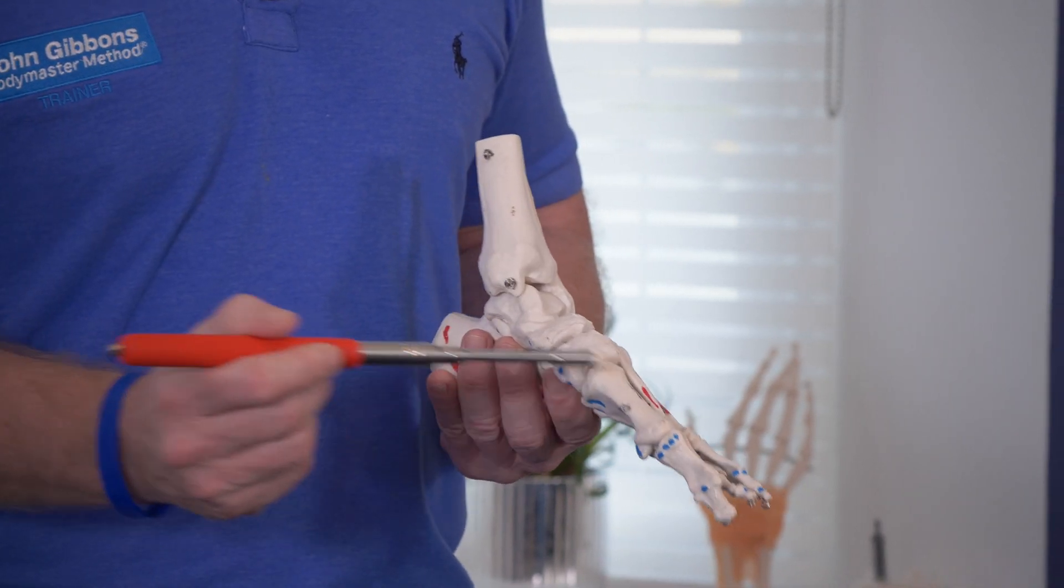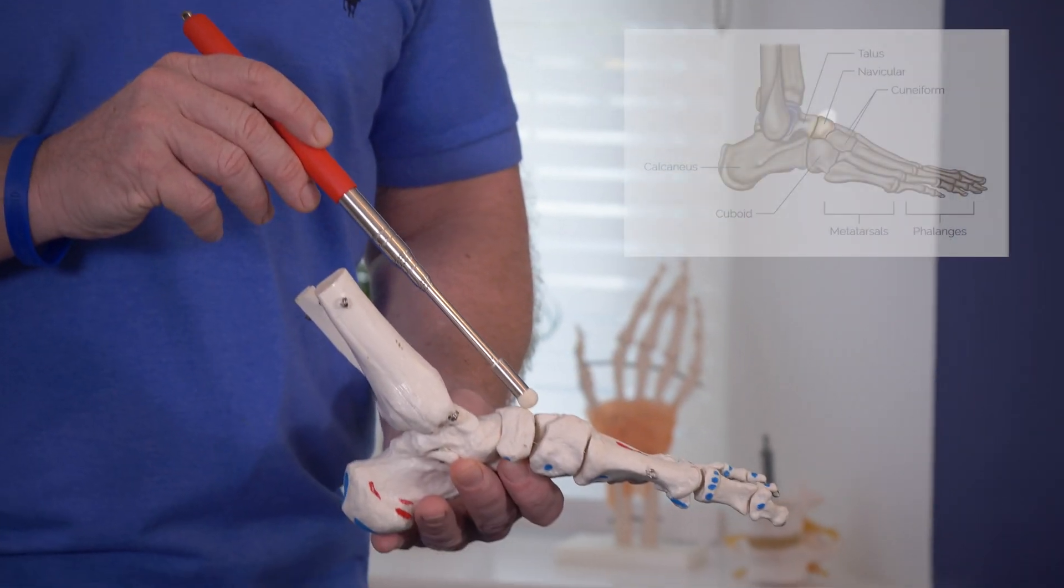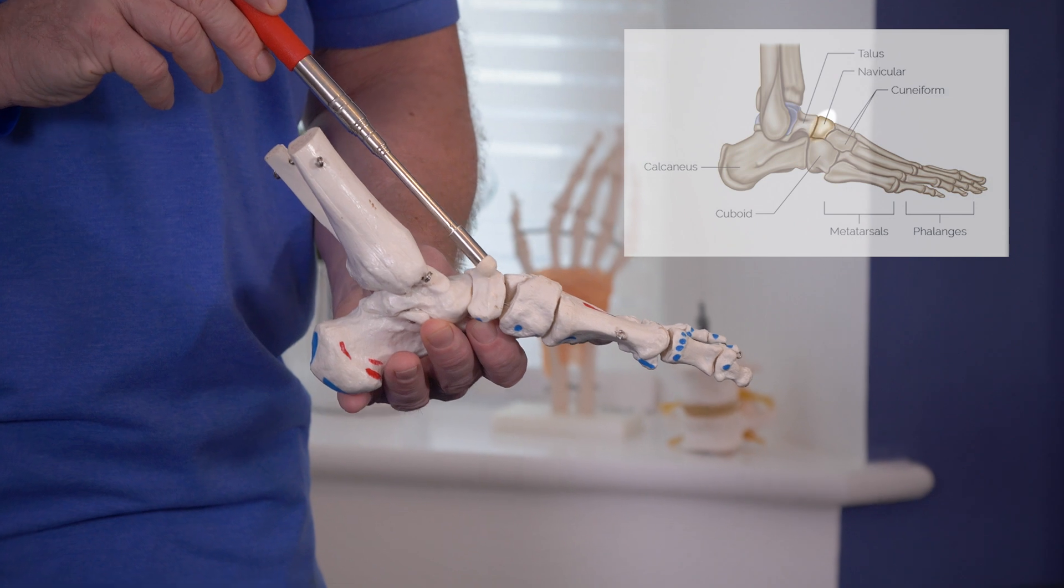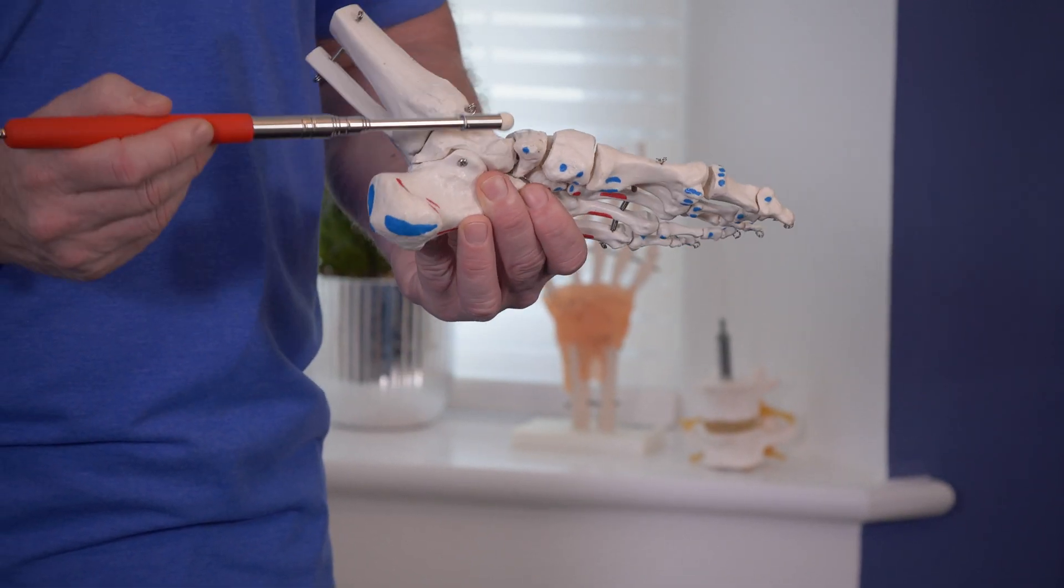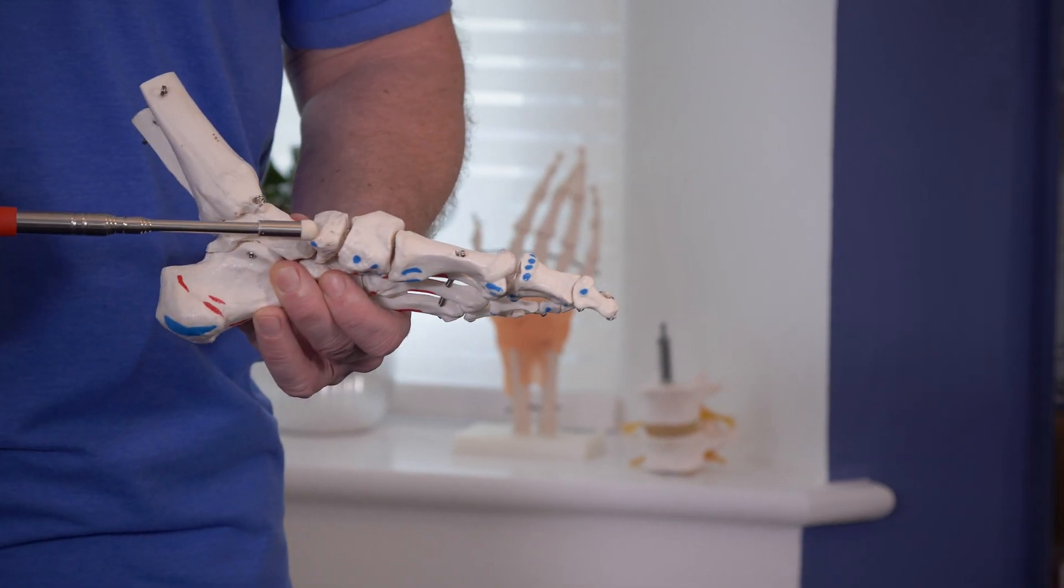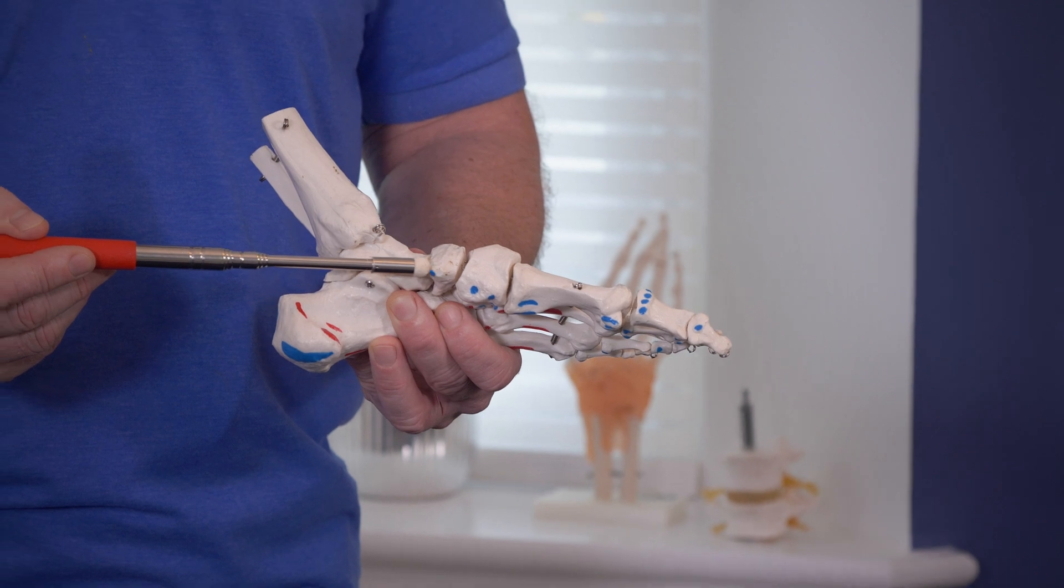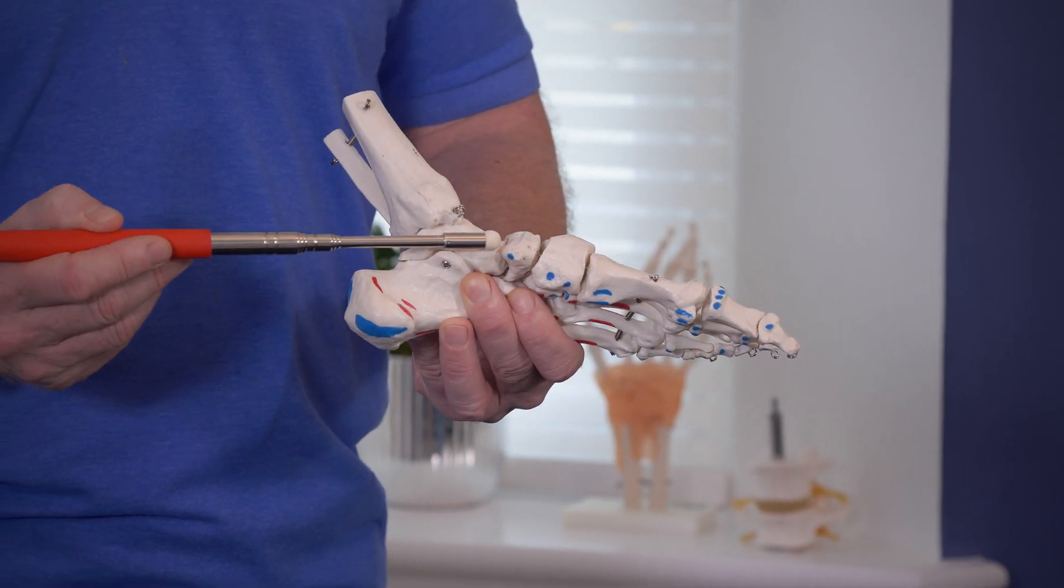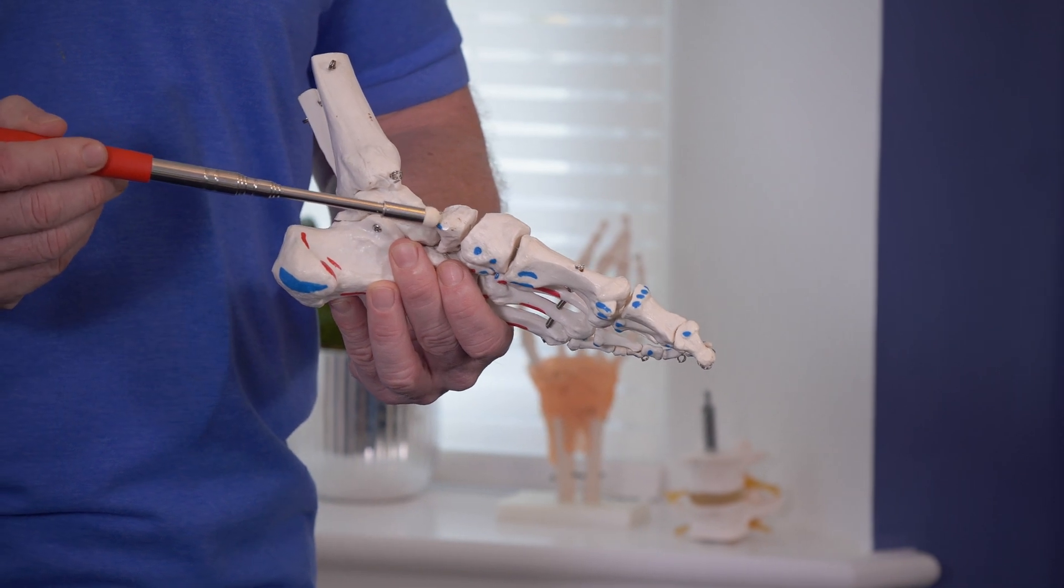Moving distally towards the foot, we have the navicular bone along here. This is similar in shape to the scaphoid within the hand. There is a bony landmark just here called the navicular tuberosity, and this area is where the attachment of the tibialis posterior comes down.